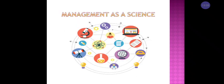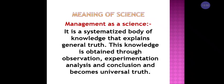Next: management as a science. What features or conditions must be satisfied to consider management as a science? Science is a systemized body of knowledge that explains general truths. This knowledge is obtained through observation, experimentation, analysis, and conclusion, and becomes universal truth.